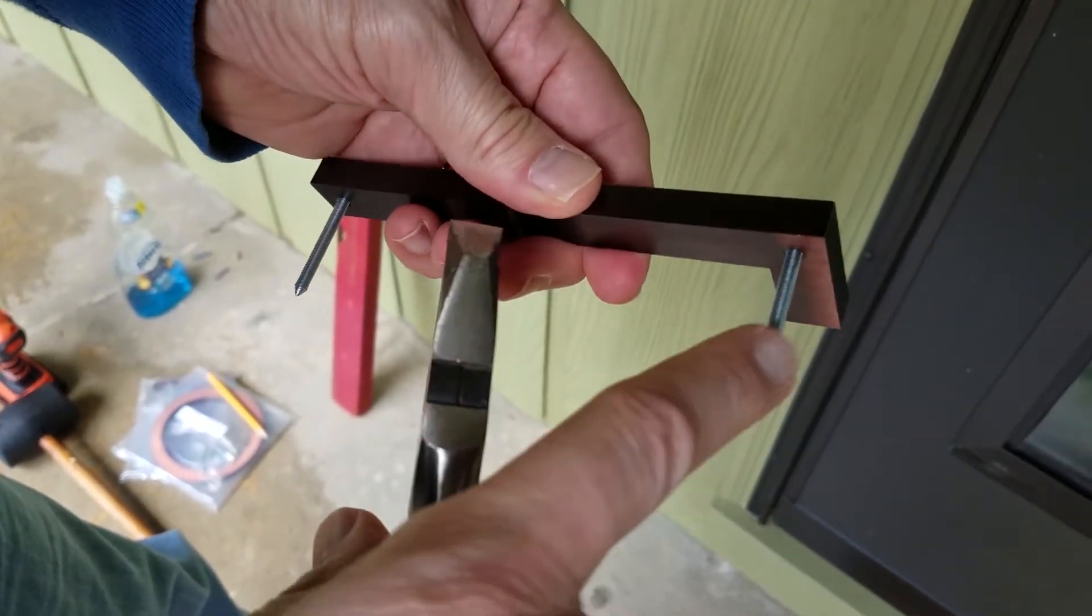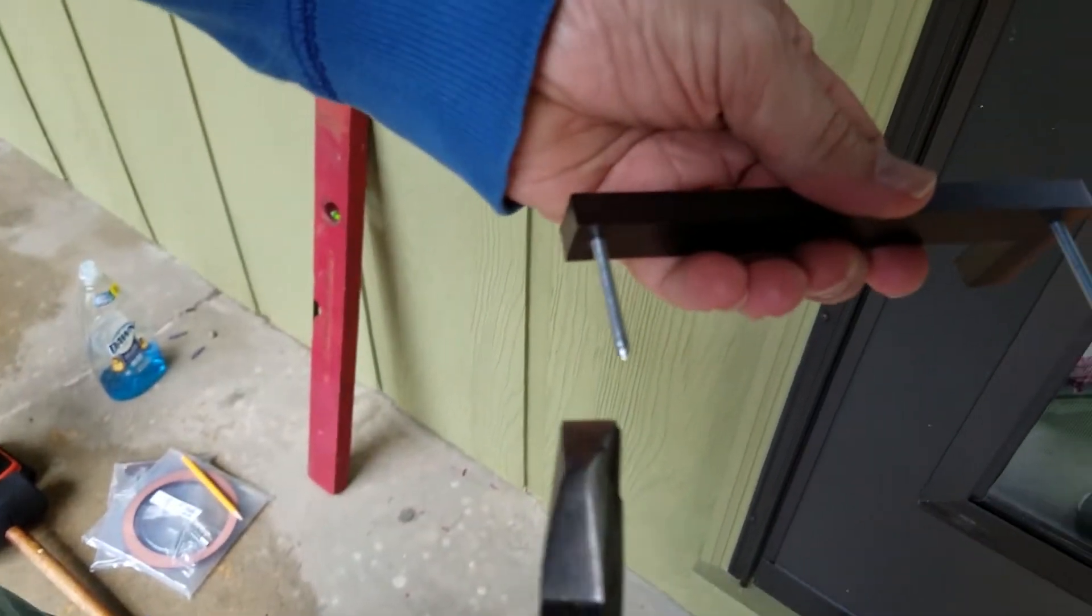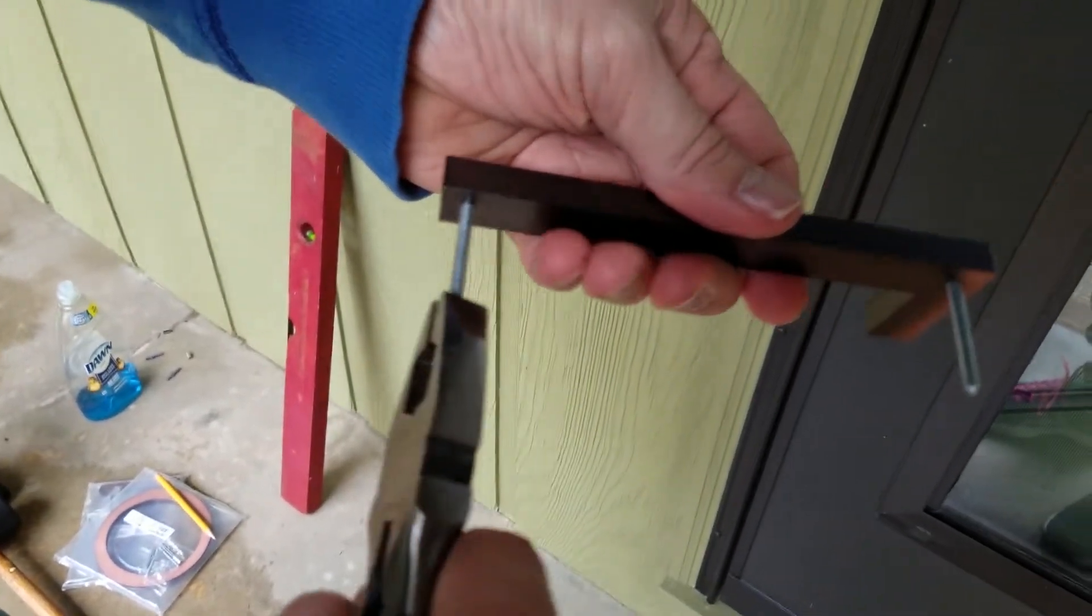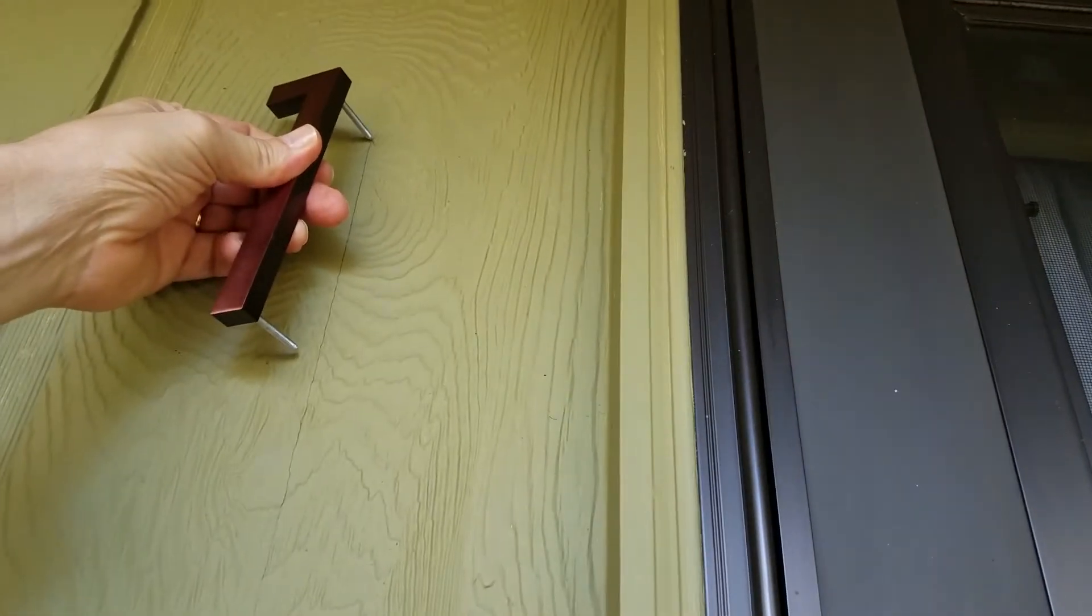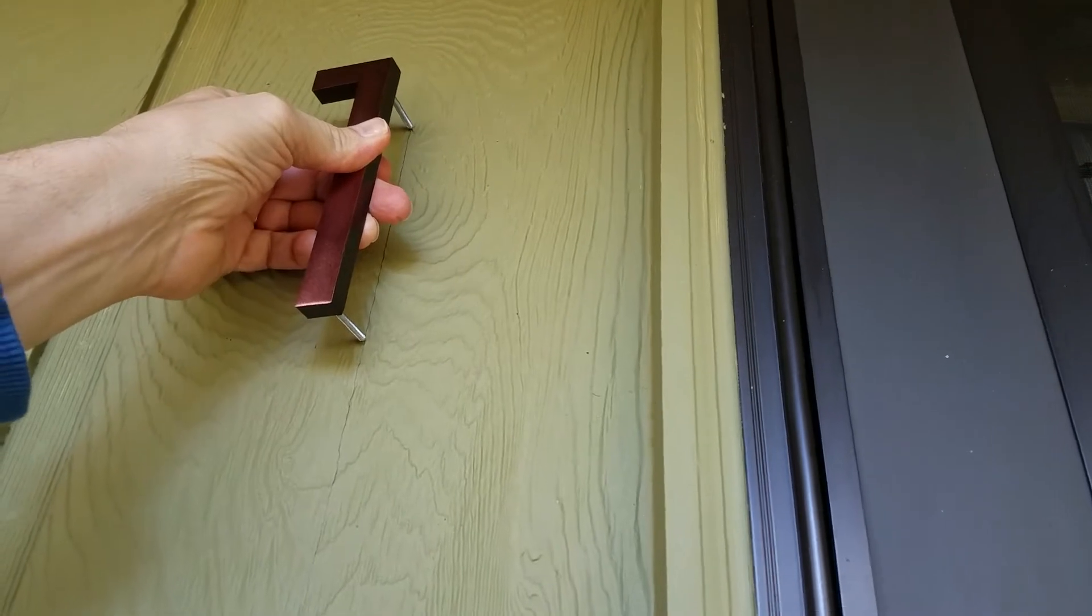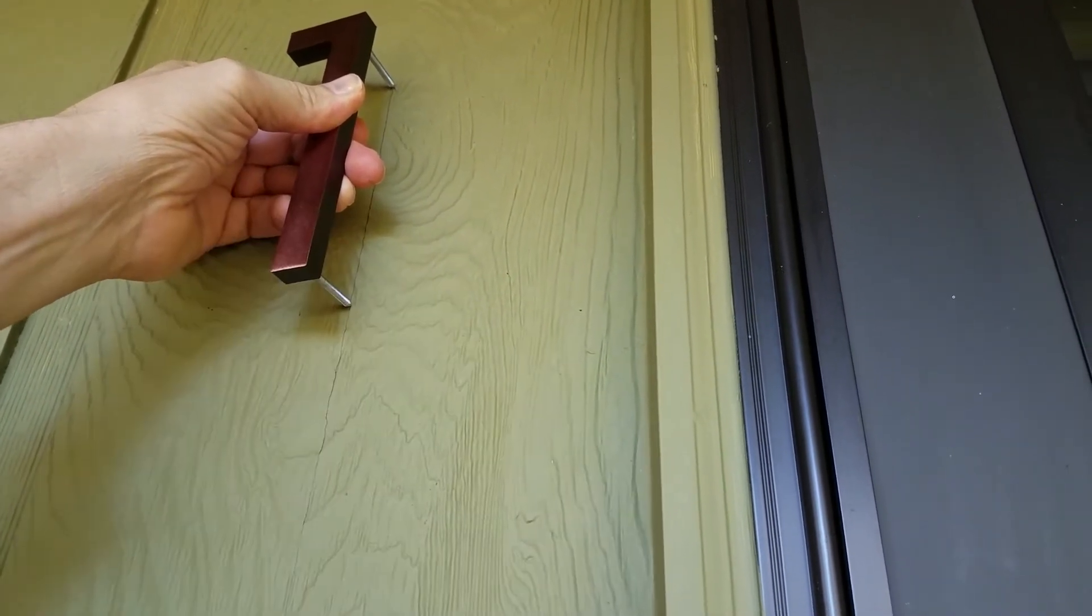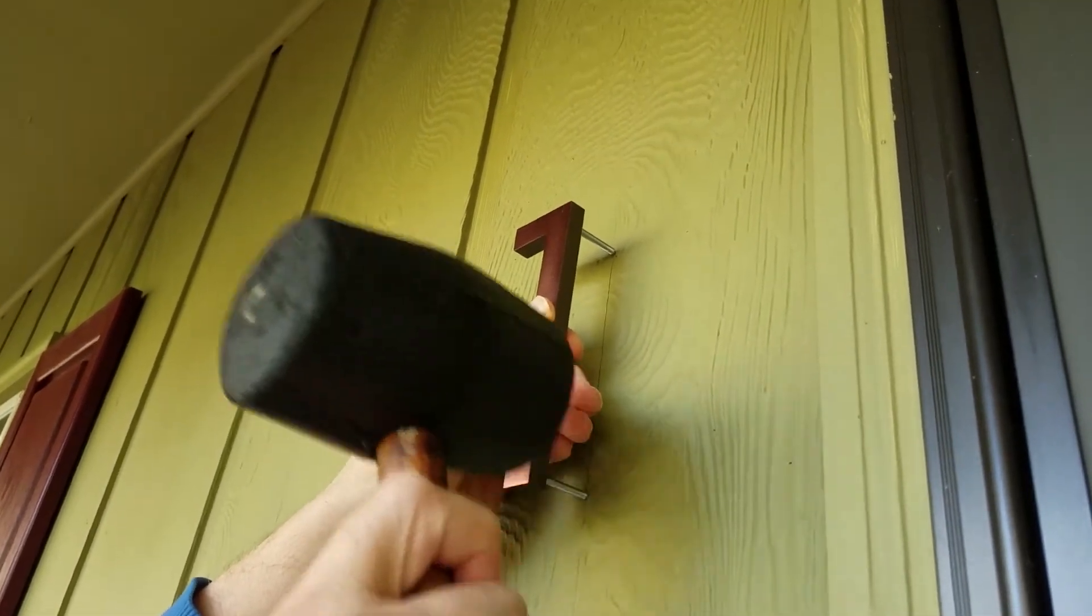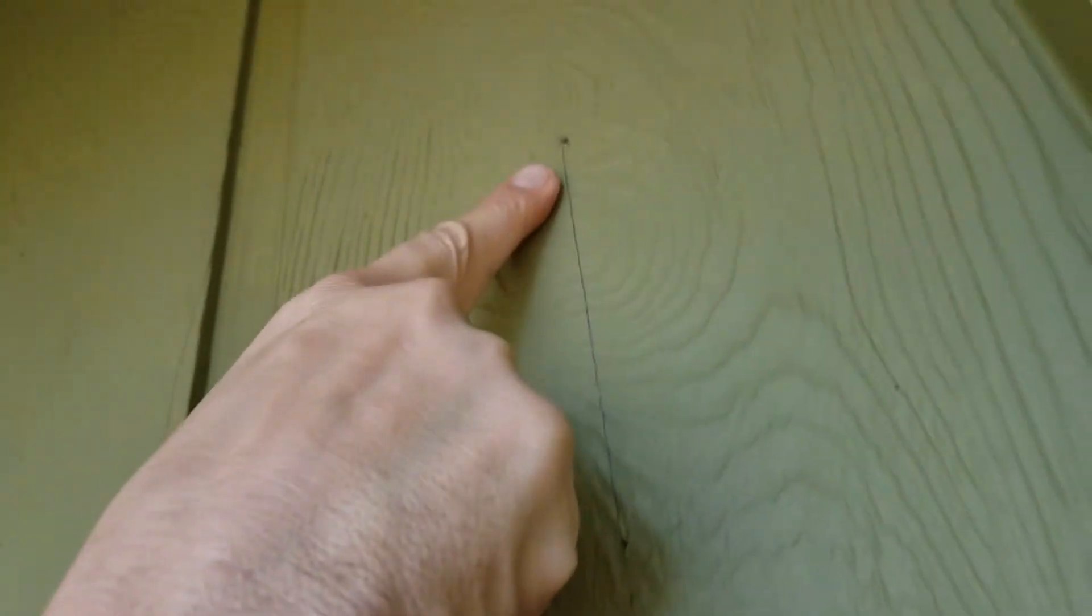Don't worry about damaging the threads because you're going to push that into the molly. Make sure you do it also for the screw on the bottom. Now we're going to put the first screw at my X, then come down along that line and put the second screw of this number, and then use the mallet to tap so I know exactly where I need to drill this hole for the molly.